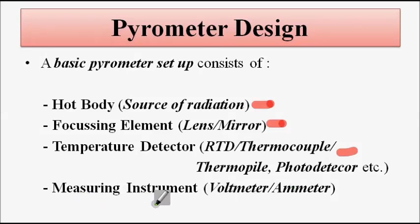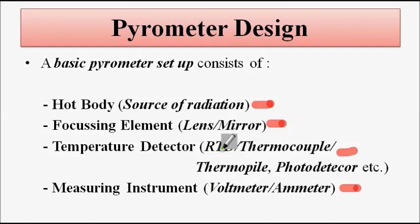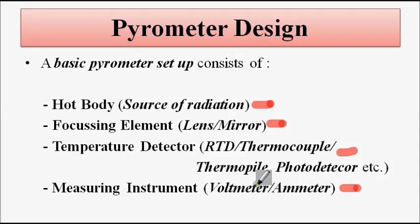Next is a measuring instrument so that we can get the output in terms of voltage or current — a voltmeter or ammeter. RTD gives output in the form of resistance change, so we can connect it to a voltage divider or Wheatstone bridge setup to convert it into voltage or current, which can then be measured with a voltmeter or ammeter. Thermocouples and thermopiles give output directly in terms of voltage, so in that case we only need a voltmeter. Depending on what type of transducer is used, the signal conditioning circuitry may vary.